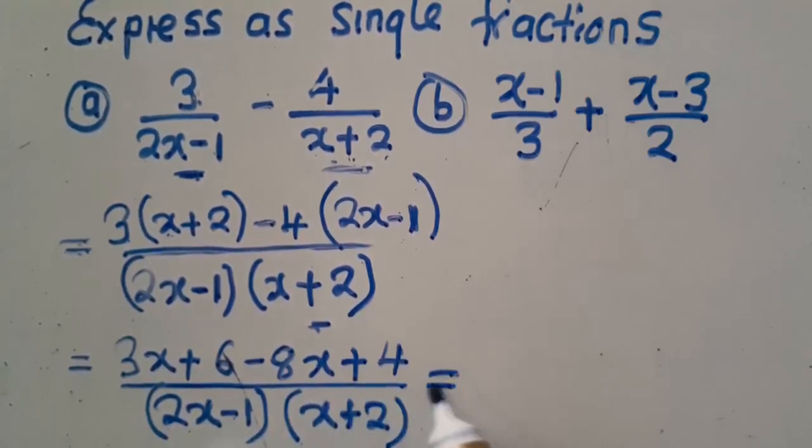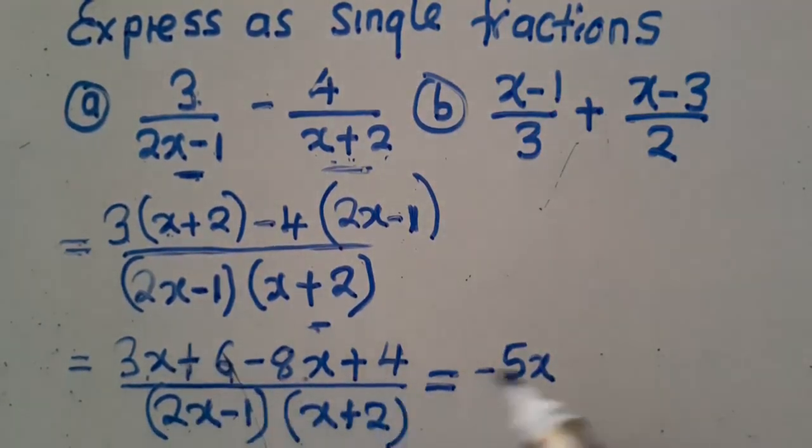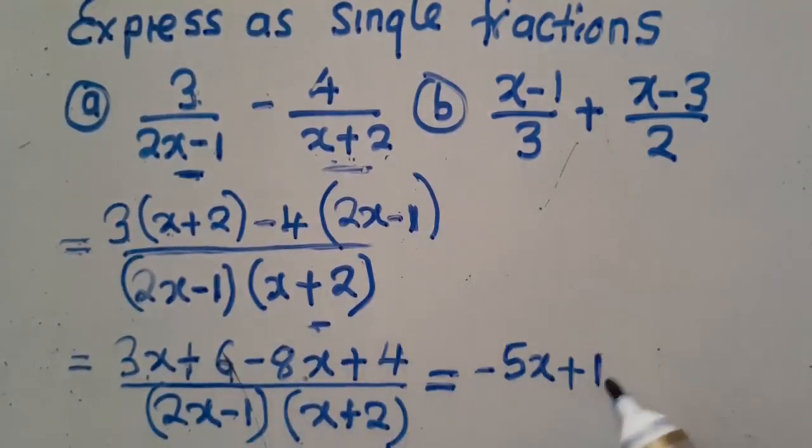This is now equal to what? You group the like terms. So you are going to have 3x minus 8x. 3 minus 8, that is negative 5x. 6 plus 4. So 6 here, the sign is positive there. So plus 4, that is plus 10. You do that.